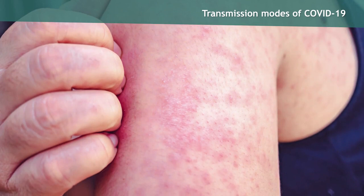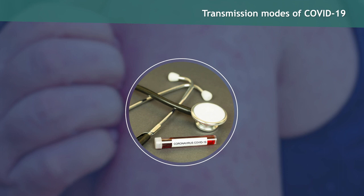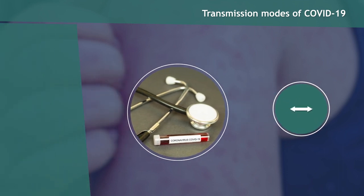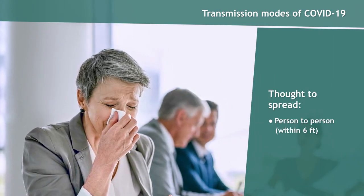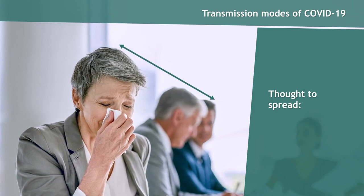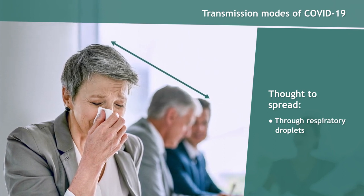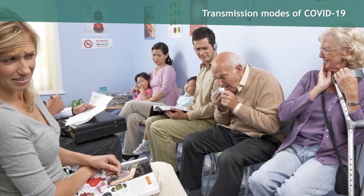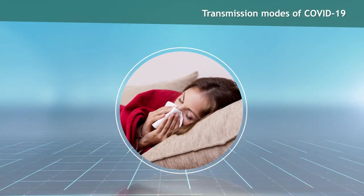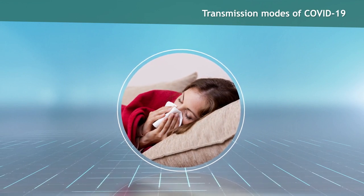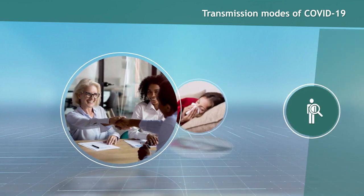Some viruses, such as measles, are highly contagious, while others are less so. Because COVID-19 has only recently been identified, its transmission modes are still being evaluated. It's thought to spread mainly from person to person, between people in close contact, within six feet, through respiratory droplets produced primarily when an infected person coughs or sneezes, or possibly when they speak or breathe. These droplets can enter the mouths, noses, or eyes of people who are nearby. People are thought to be most contagious when they are most symptomatic, the sickest. However, infected individuals can spread the virus to others, whether displaying symptoms or not.